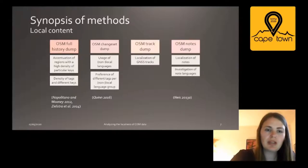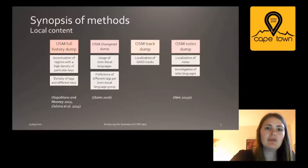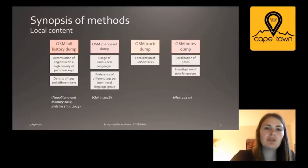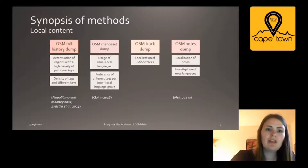The OSM track dump or the OSM nodes dump can also be observed. The track dump only exists until 2013, but it can still be an indicator for local knowledge because tracks are usually collected on the ground with one's own equipment. Pascal Neis also looked at the OSM nodes dump and localized the nodes per country. Further investigation of the local language of the nodes can lead to information about local knowledge.